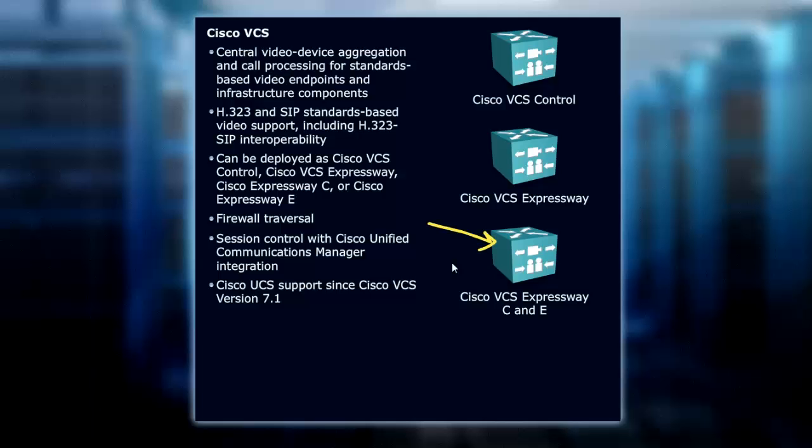Very generally, that's what firewall traversal is all about — not having to VPN in and having the capabilities to come in through the firewall through the Edge into the Core VCS Expressway. That's going to be a hot topic. It really opens up a lot of video capabilities between businesses.